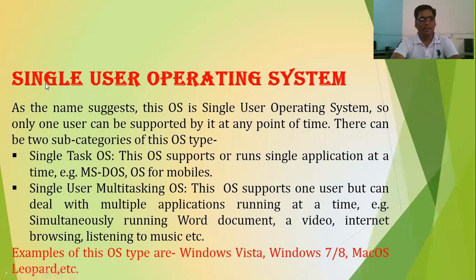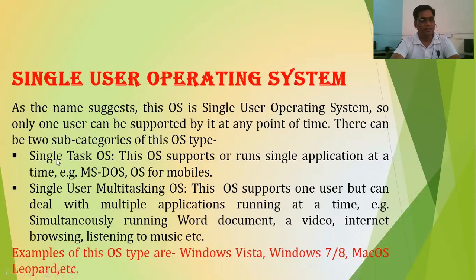The first one is single user operating system. As the name itself suggests, only one user can be supported by it at any point of time. There can be two subcategories of this OS: single task OS and single user but multi-tasking OS.